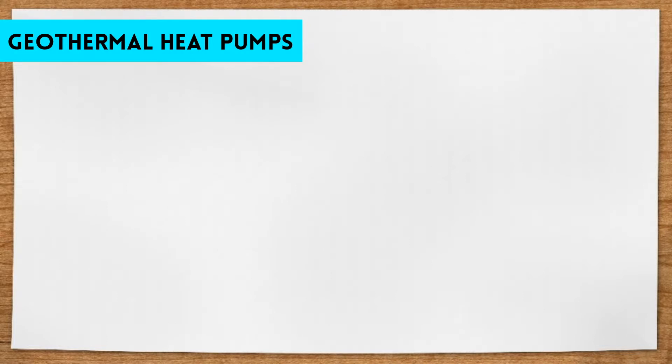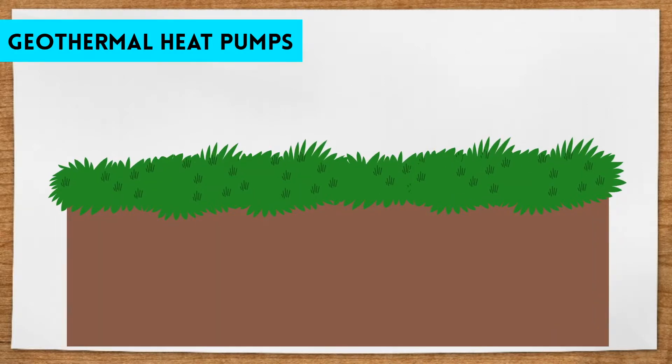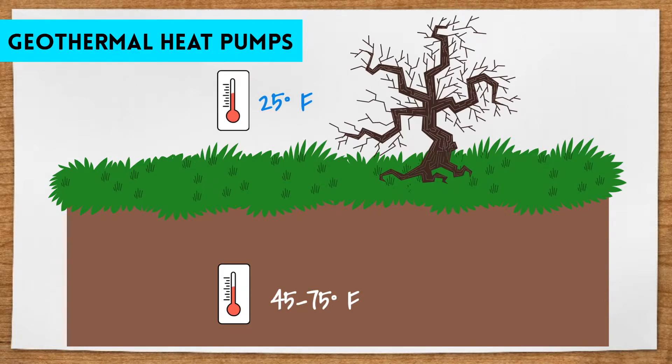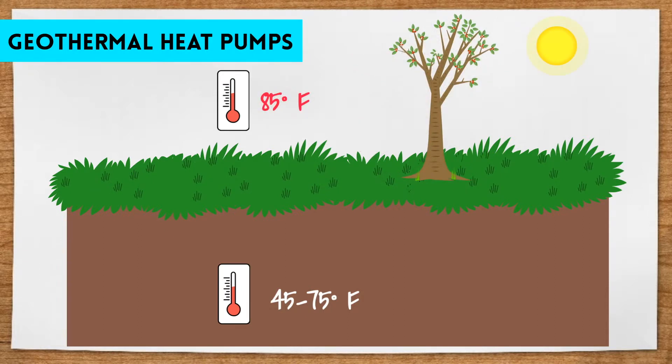A few feet below the Earth's surface, the ground remains at a relatively constant temperature, ranging from 45 to 75 degrees Fahrenheit, depending on the latitude of the location. This ground temperature is always warmer than the air above during winter and cooler than the air above in summer.